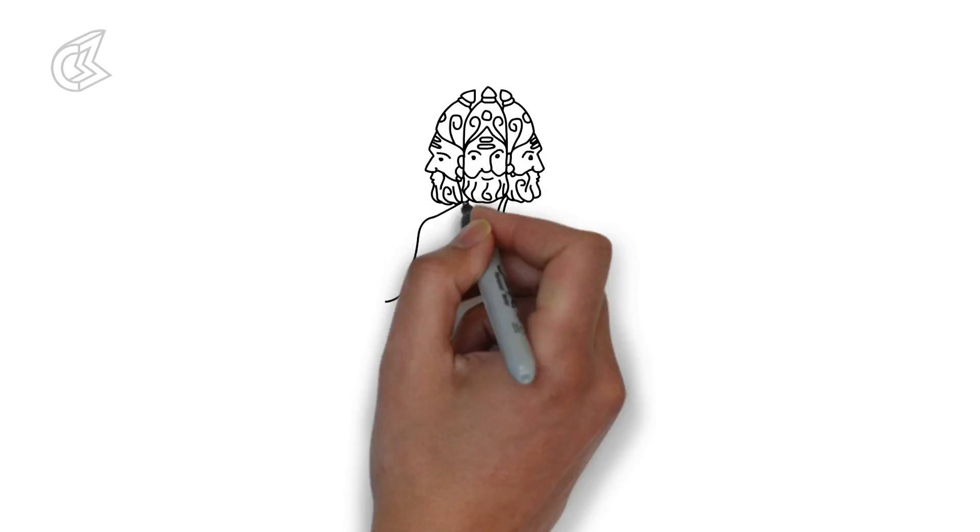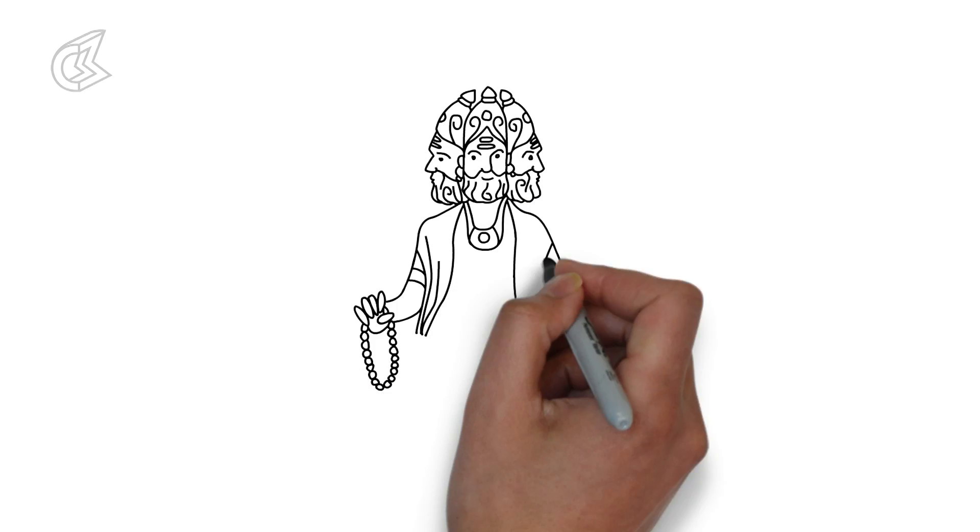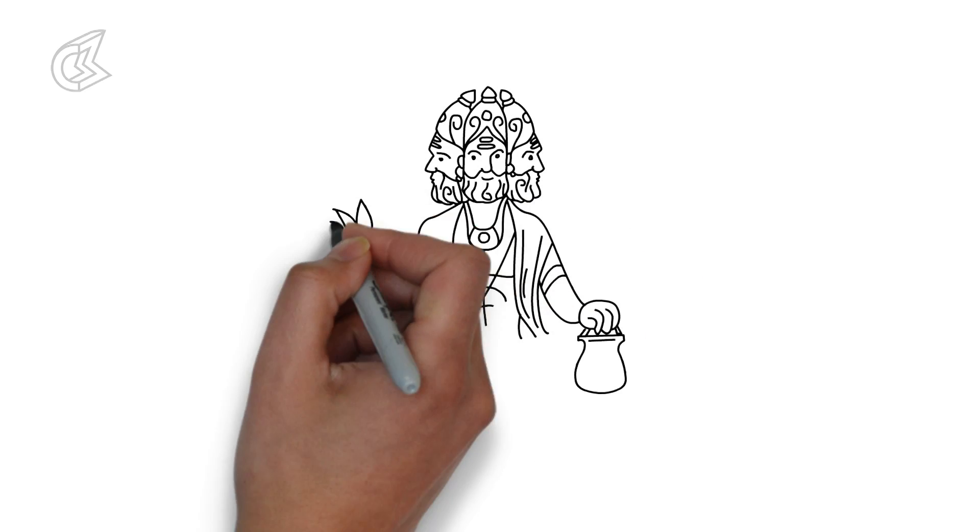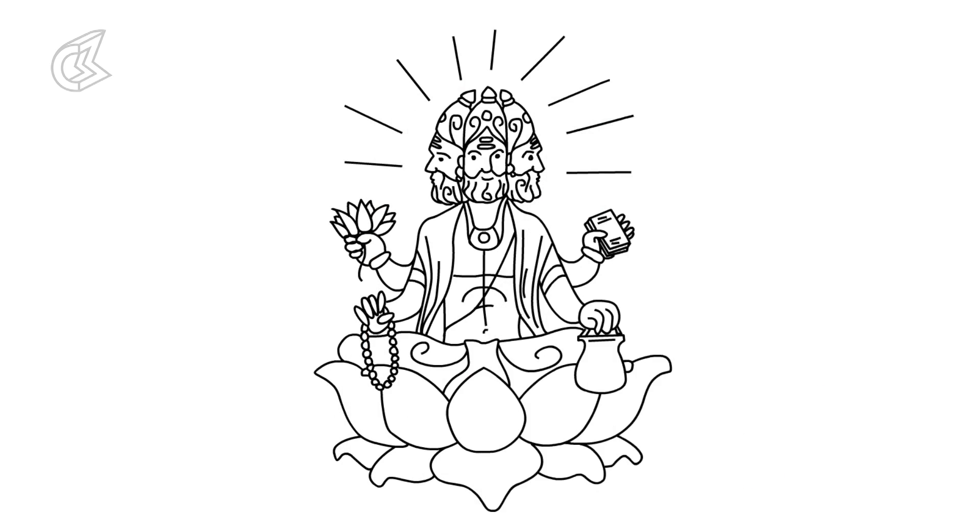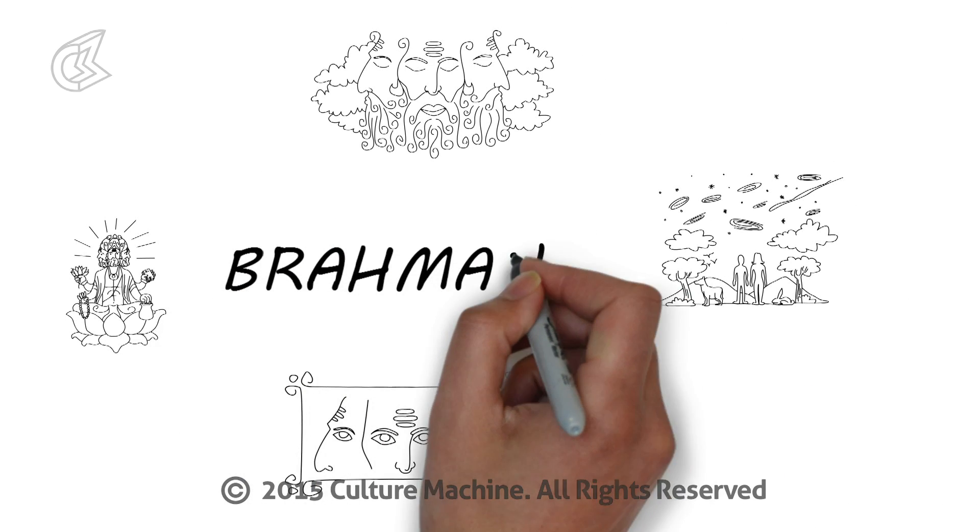At the end of 100 such cycles, Brahma perishes and is once more regenerated. In this manner, the universe is created and destroyed eternally. This is the cycle of Brahma.